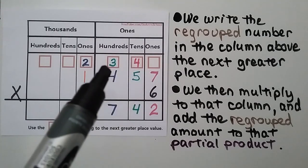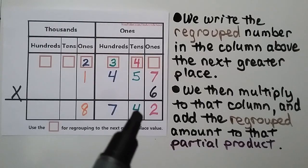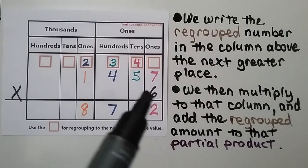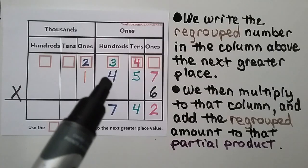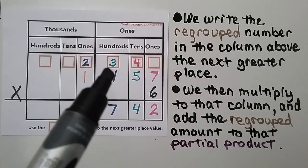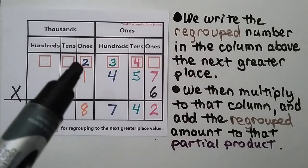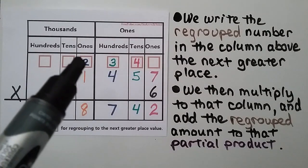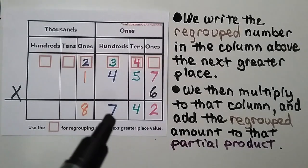We regroup the 3 to the hundreds place and put the 4 down in the tens place. We have 6 times 4, which is 24, and 3 more is 27. We regroup the 2 to the one thousands place and put the 7 in the hundreds place.